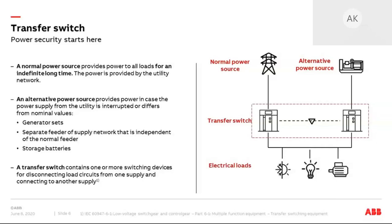In order to guarantee power continuity, these loads usually have more than one source of power. In addition to the normal power source, which provides power for an indefinitely long time, these loads have an alternative power source that provides energy in case power supply from the normal source is interrupted or differs from nominal values. Normal power source usually comes from the utility, while the alternative power source can be generator sets, a separate feed or supply network, or an energy storage system. This brings us to the definition of a transfer switch: equipment containing one or more switching devices for disconnecting load circuits from one supply and connecting to another.